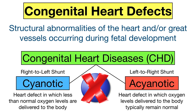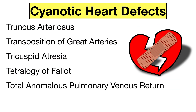In this video, we're going to focus on cyanotic congenital heart defects and go over a simple memory trick to remember them. Here is a list of the main cyanotic congenital heart defects — the heart defects that can cause cyanosis. The first trick: as you can see, they all start with the letter T. So when you see a congenital heart defect on an exam that starts with T, there's a good chance it's a cyanotic heart defect.